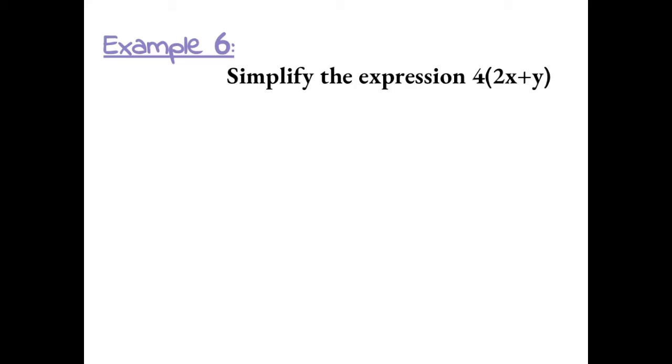Example 6: Simplify the expression 4 times the sum of 2x plus y. Because there's two different operations happening in this expression, in between the 4 and the parentheses represents multiplication and here we have addition. There's only one property that we can use when the number on the outside is being multiplied and inside we have addition or subtraction, and that's the distributive property. So to distribute this, we have to multiply the number on the outside with each term. So 4 has to first be multiplied with 2x.